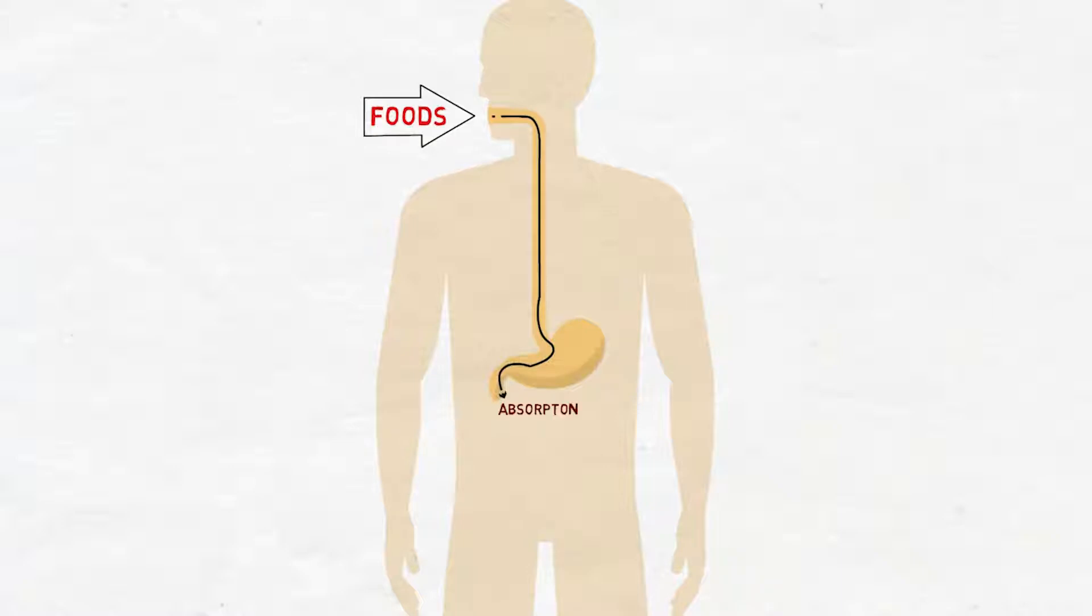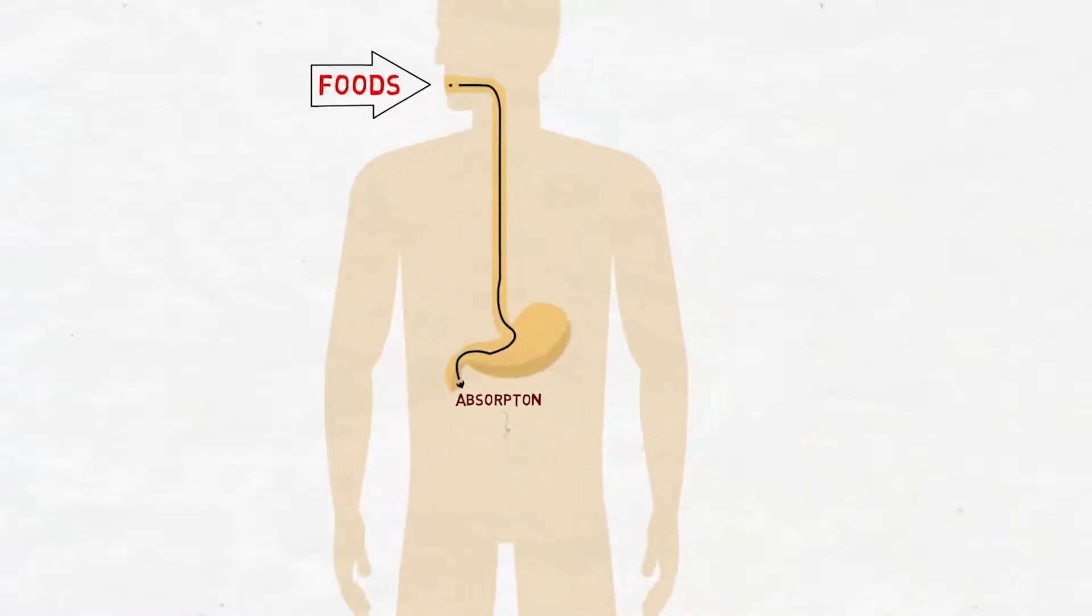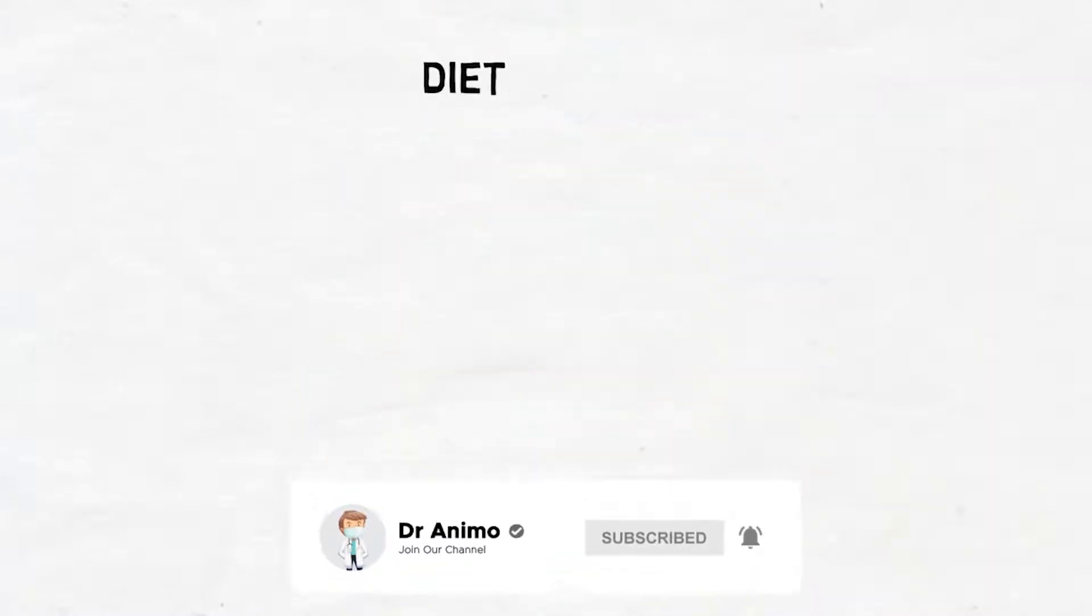The absorbed iron is transported to tissues either for utilization or for storage. So this is the overall story of absorption of iron. Now let's try to describe it in details.